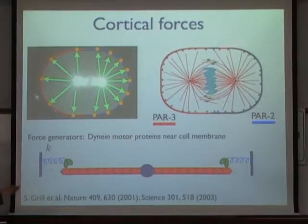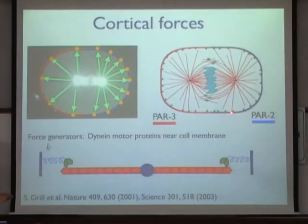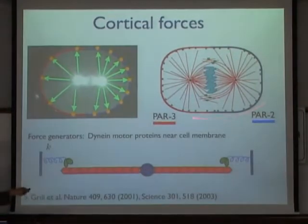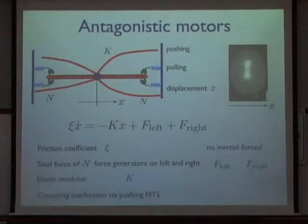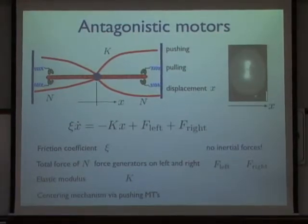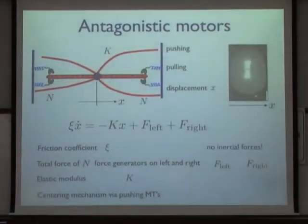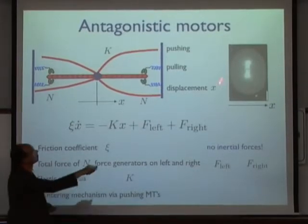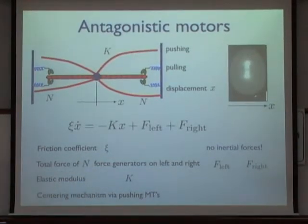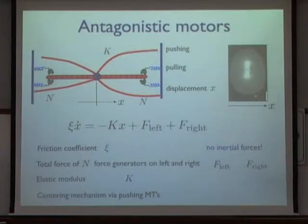The basic idea is that cortical force generators pull on microtubules — force generators that want to move towards the minus end of microtubules interact and pull. As the cortex is asymmetric, there can be a different number of active motors on one side compared to the other, and the net force displaces the spindle. To study how this scenario gives rise to oscillations, we use a simple one-dimensional physical description. Microtubules radiate out along one direction; they can bind to force generators that pull on them, while other microtubules not interacting with force generators lead to pushing forces and can buckle, giving rise to a restoring force.